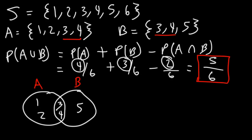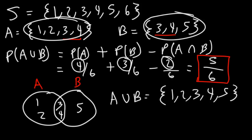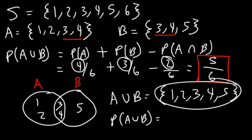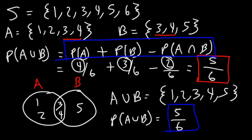Let's verify this answer. The union of A and B: A has numbers 1 to 4, B has 3, 4, and 5. So the sample space of A or B is the numbers 1 through 5 — that's 5 favorable outcomes out of 6 total. So the probability is 5 over 6, confirming our formula works.